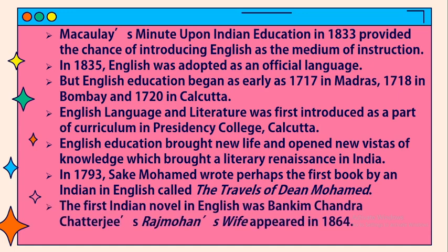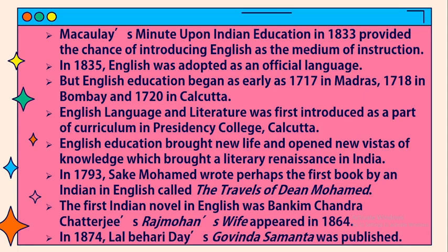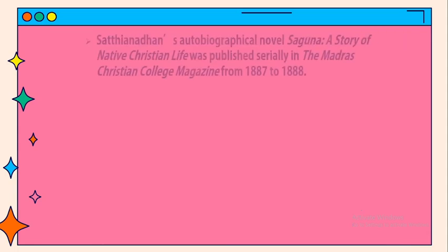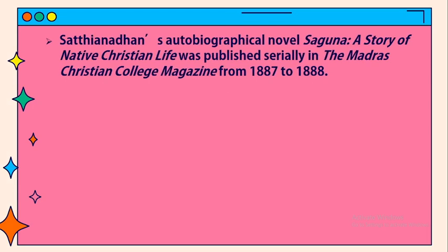The first Indian novel in English was Bankim Chandra Chatterjee's Rajmohan's Wife, which appeared in 1864. In 1874, Lal Bihari Day's Govinda Samanta was published. Krupabai Satthianadhan's autobiographical novel Saguna: A Story of Native Christian Life was published serially in the Madras Christian College magazine from 1887 to 1888.